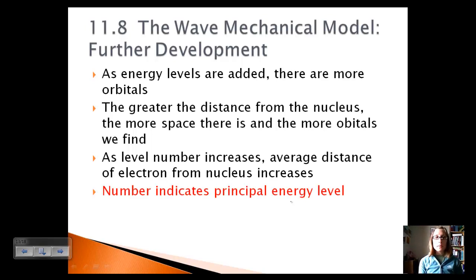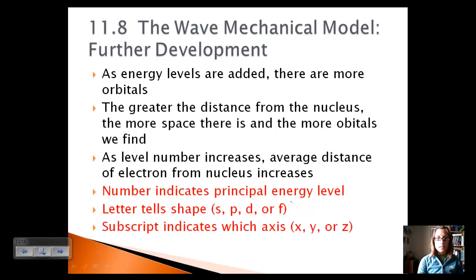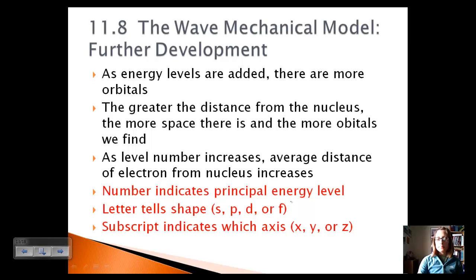Some key things to remember: the number indicates the principal energy level, and a bigger number means more energy and greater distance from the nucleus. The letter tells you the shape of the orbital — s, p, d, or f. The subscript indicates which axis the orbital is on, which applies mainly to p but is present in the others as well.